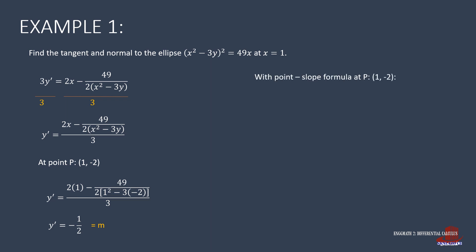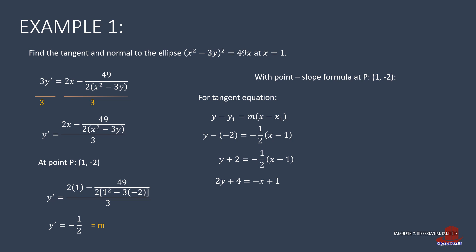We find the tangent and normal equations using the point-slope formula: y minus y1 equals m times (x minus x1). Plugging in the coordinates as x1 and y1 with slope m, and simplifying, gives 2y plus 4 equals negative x plus 1. Transposing terms with variables to the left and constants to the right, the tangent equation of the curve at that point is x plus 2y is equal to negative 3.